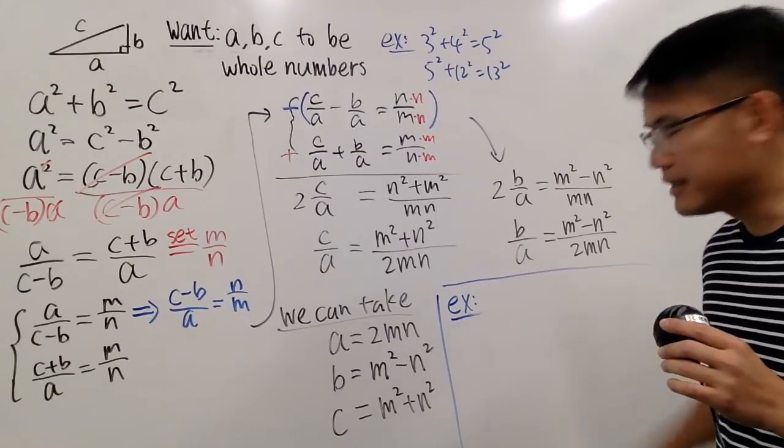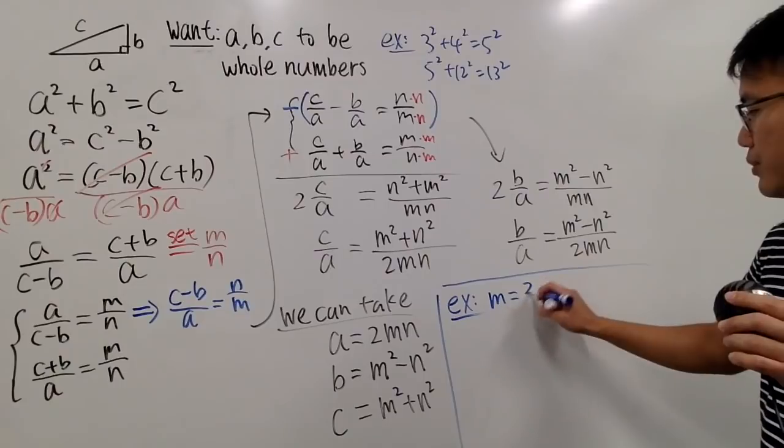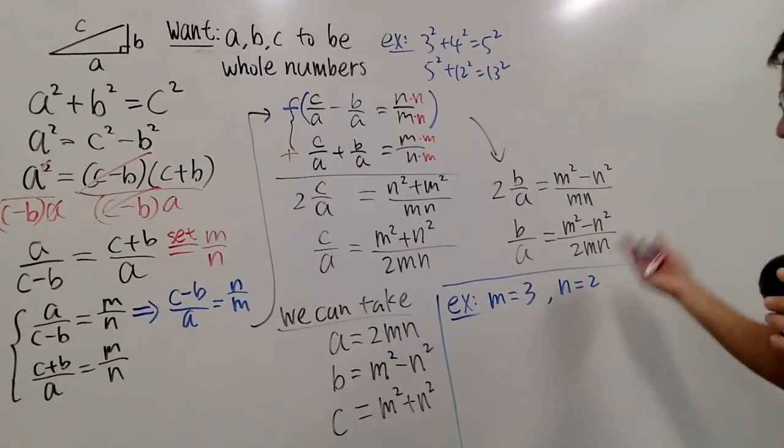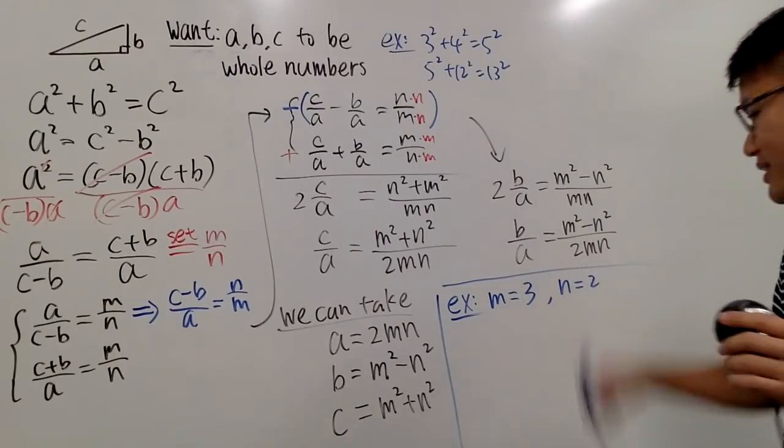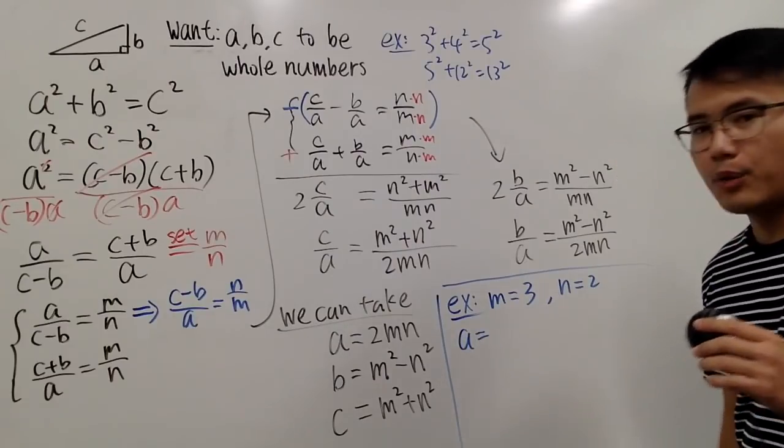before we go, let's do a quick example. I am just going to take, let me say, M to be 3 and N to be 2. And you can do whatever you want seriously. But yeah, this is what I want to do. Anyway, let's see what kind of Pythagorean triple we are going to get.